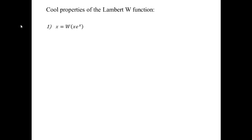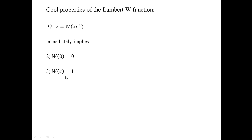I'd like to wrap up by sharing a few core properties of the Lambert W function. We basically saw two of them already. The first is that x equals W(x times e to the x) — this just comes from the inverting property of W: if you do the forward operation x times e to the x, the way you undo it is by applying W, so you get back what you started with, x. From that basic property, substituting x equals 0 gives 0 equals W(0 times e to the 0), so W(0) equals 0. Substituting x equals 1 gives 1 equals W(1) times e to the 1, which means 1 equals W(e) times e, so the next property is that W(e) equals 1.